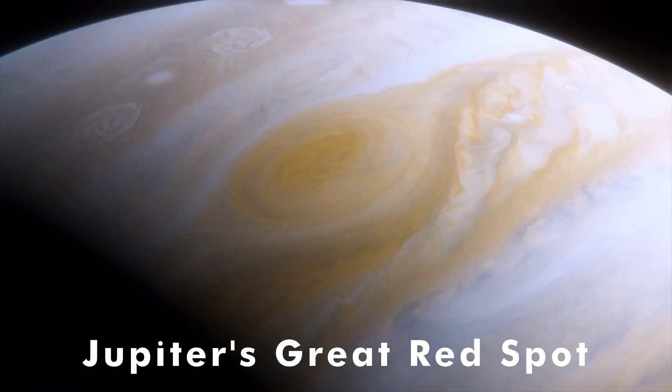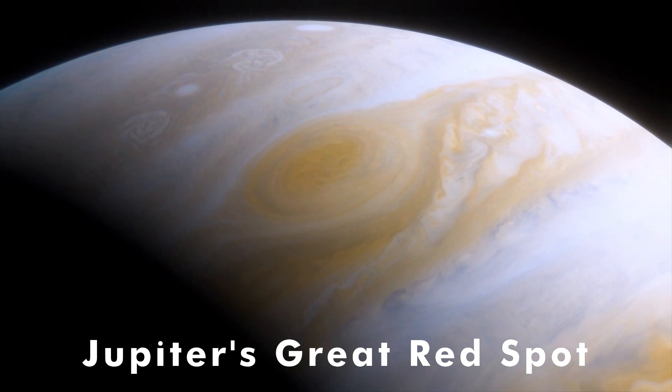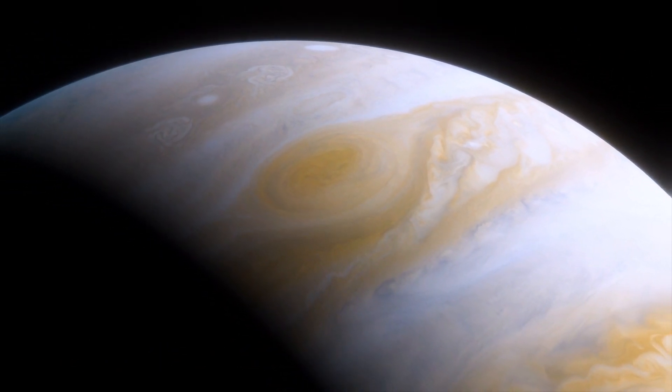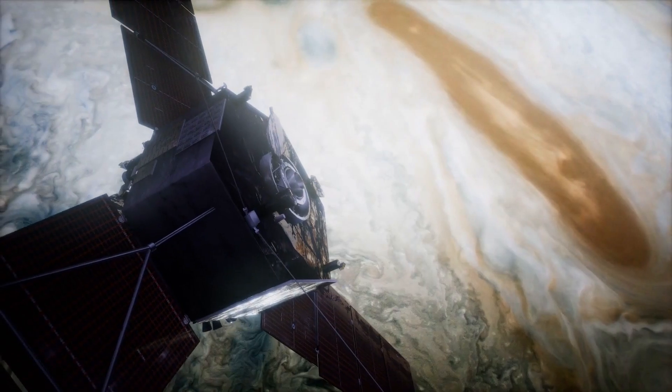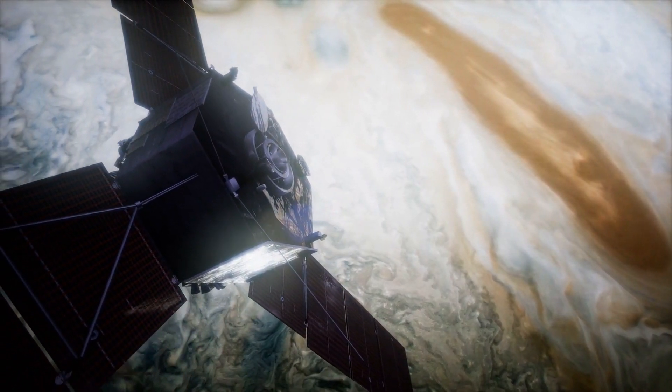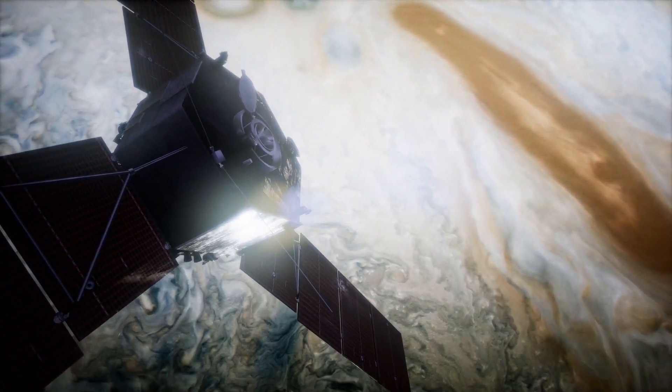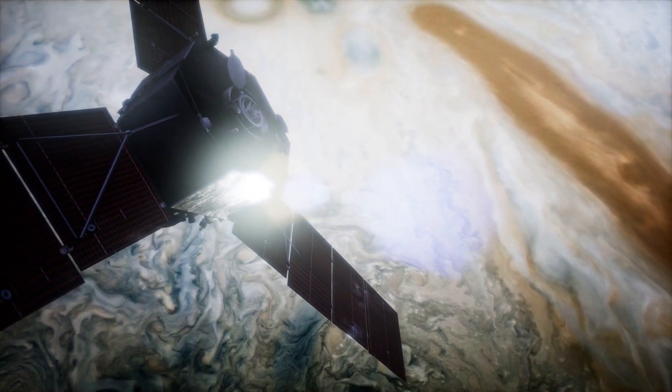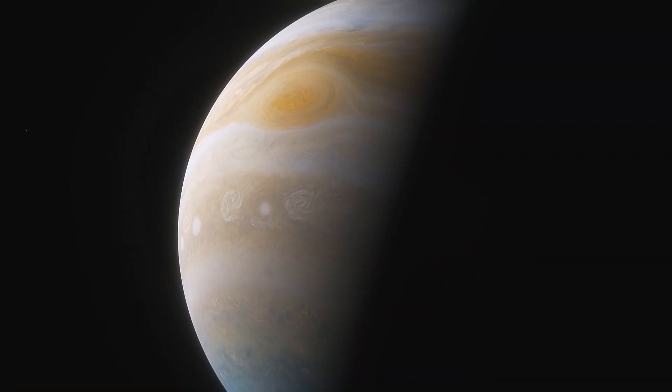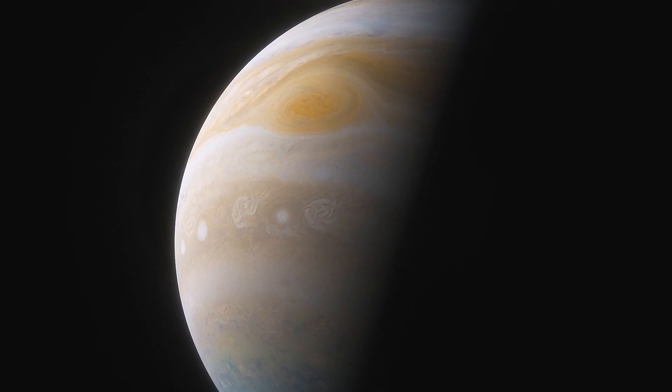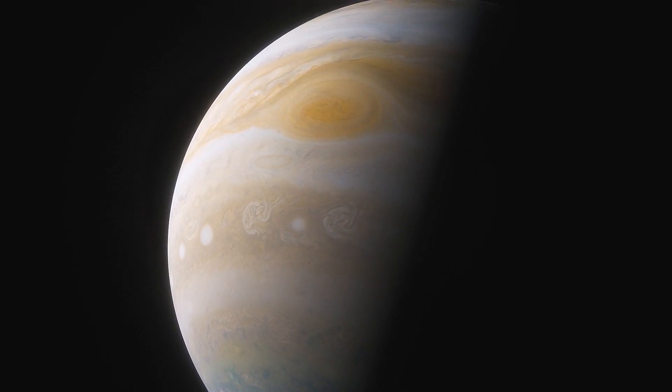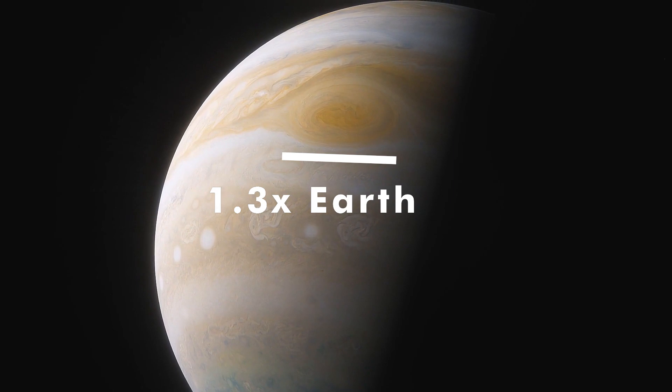Jupiter's Great Red Spot is a storm in Jupiter's southern hemisphere, with crimson-colored clouds that spin counterclockwise at wind speeds that exceed those in any storm on Earth. The Great Red Spot is more than just a small blemish, and has slowly changed over the years. It's currently about 1.3 times as wide as our planet.